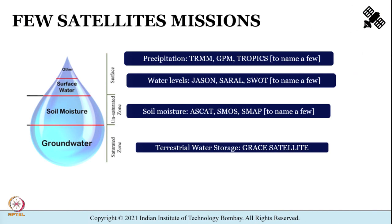Shown here are a few satellite missions relevant to measuring variables important in hydrology and water resources engineering. Water has been subdivided into groundwater, soil moisture, surface water, and others, so you can see what is available in the saturated zone, unsaturated zone, and the surface. Missions like the Tropical Rainfall Measuring Mission (TRMM), the Global Precipitation Measurement mission (GPM), and TROPICS help us study precipitation.